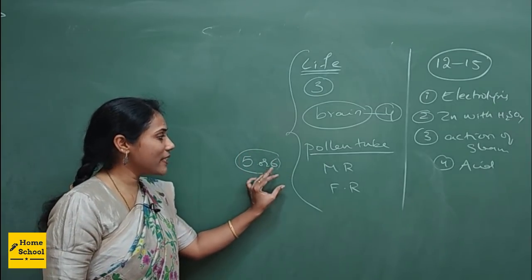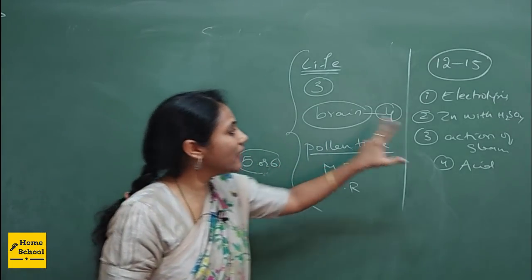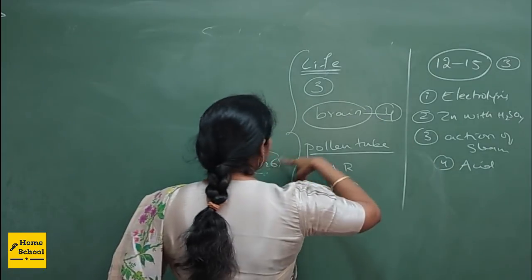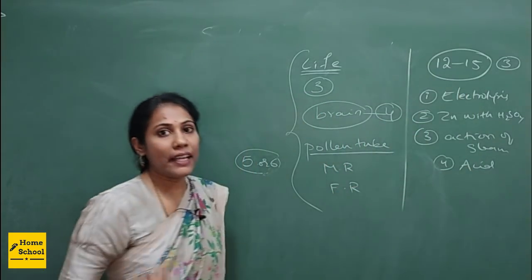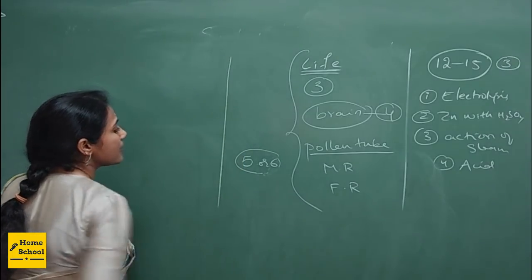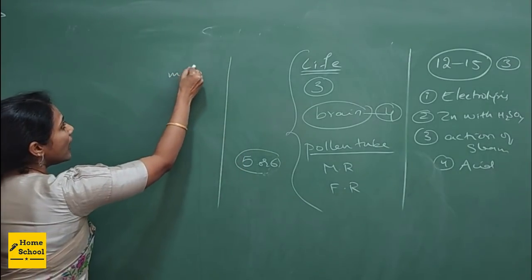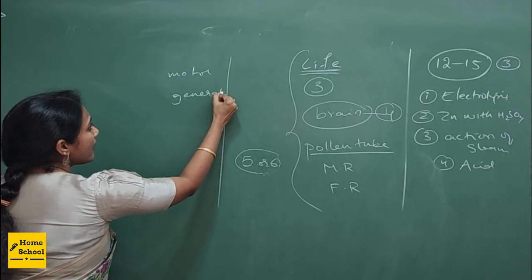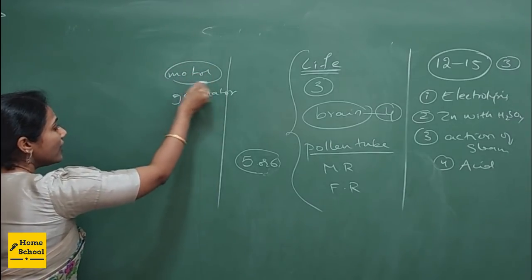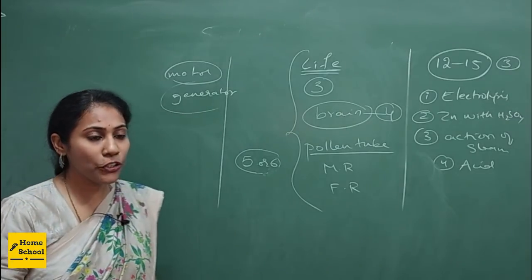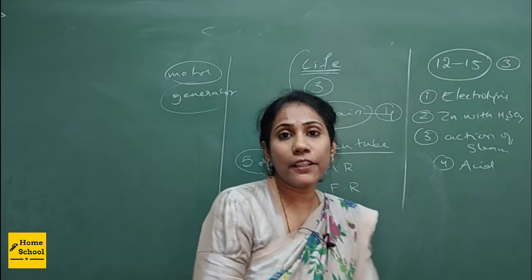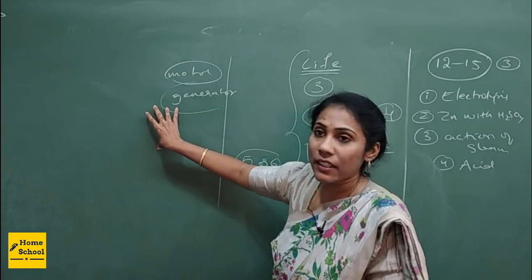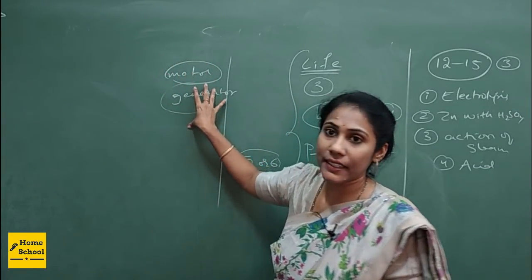So if you take six marks from biology diagrams and three from chemistry, that's already nine marks. From the physics part, you have electric motor and electric generator — one question is compulsory, either motor or generator. You have to be very careful with the principle, construction, and working of both the electric motor and electric generator.